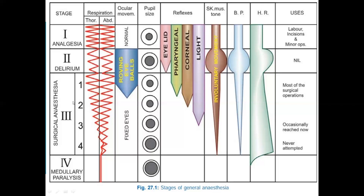Nowadays most surgical operations are performed in Stage 3 Plane 2. Plane 4 spans from complete intercostal muscle paralysis to diaphragmatic paralysis. Here both intercostal muscles and the diaphragm are paralyzed, leading to apnea. Pupils are dilated, involuntary movement is absent, blood pressure drops, and heart rate may increase. This stage should never be reached.